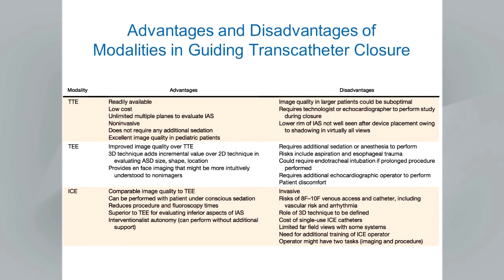Transesophageal echo offers improved image quality over transthoracic — especially in adult patients — and the opportunity to perform 3D, which adds incremental value in evaluating the size, shape, and location of atrial septal defects. 3D imaging provides on-foss imaging that may be more intuitively understood by non-imagers, surgeons, or interventionalists. Disadvantages include the need for additional sedation or anesthesia, risks of aspiration and esophageal trauma, and often endotracheal intubation for prolonged procedures.